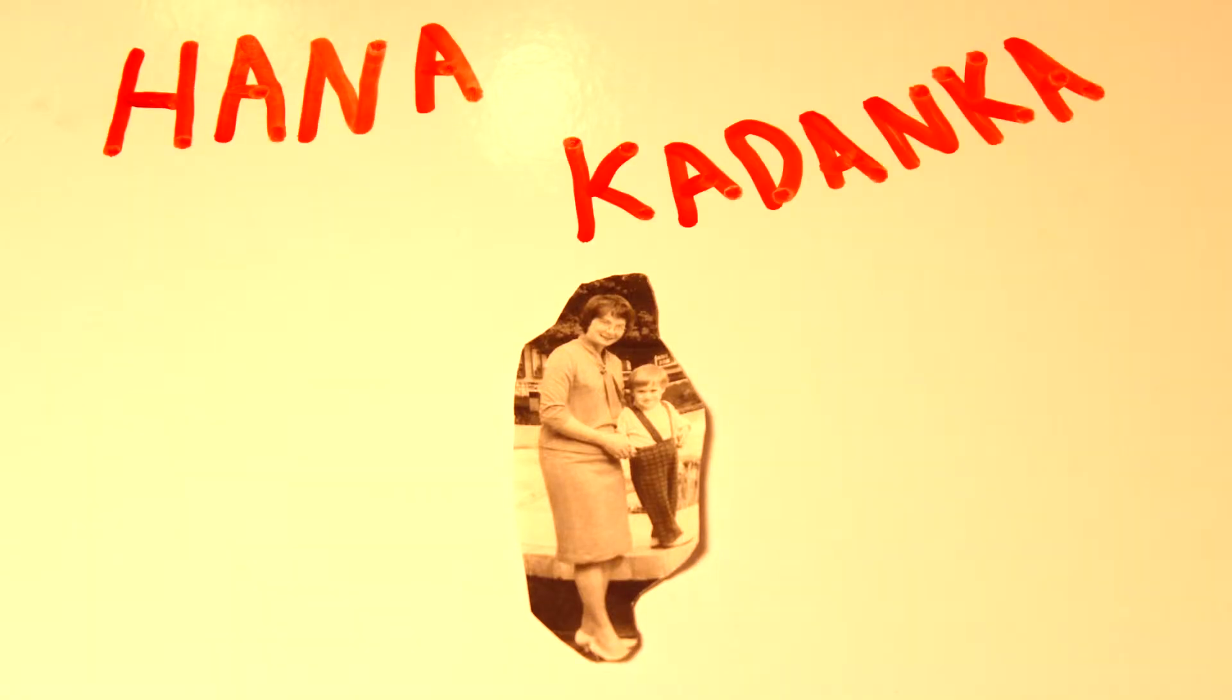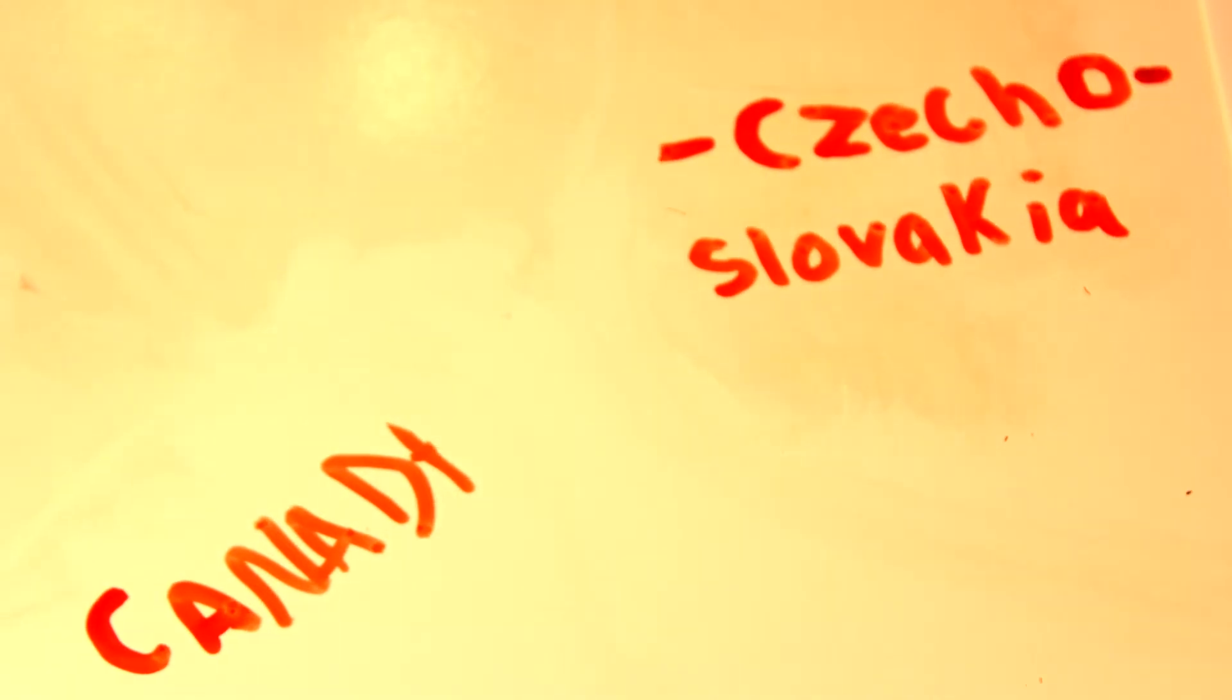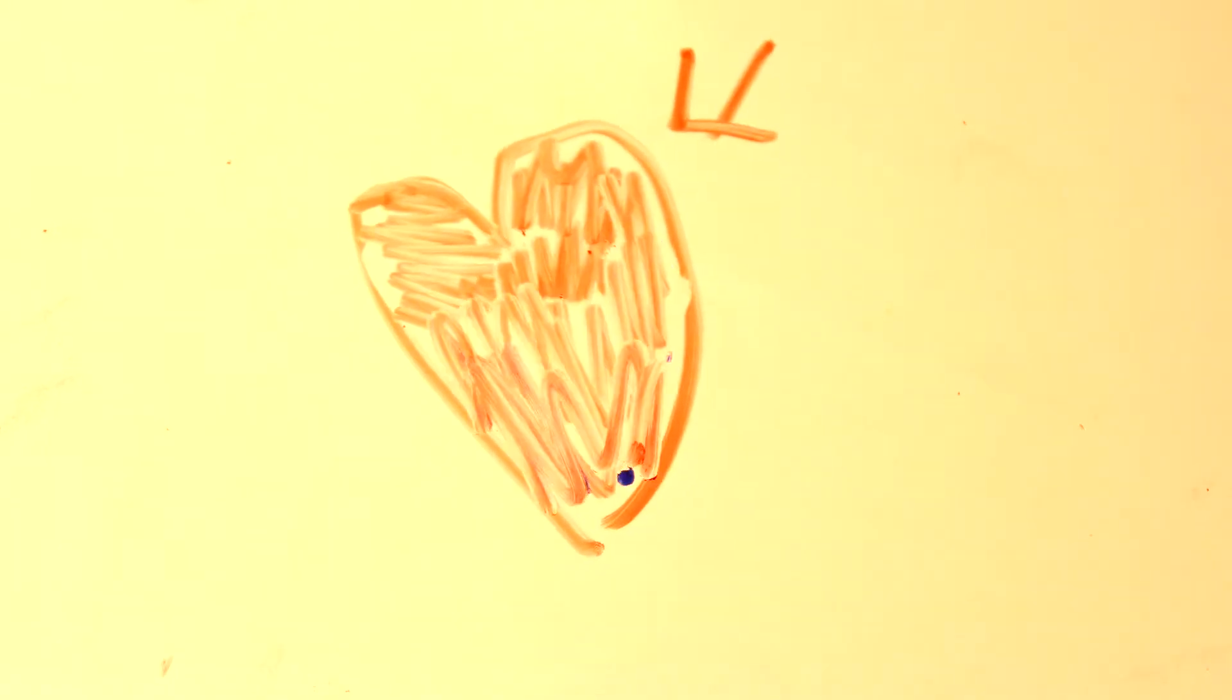My name is Hanna Kadanka. I came to Canada from Czech Republic, that was Czechoslovakia in those days. I was born with congenital heart disease and had to have surgery to have it corrected.